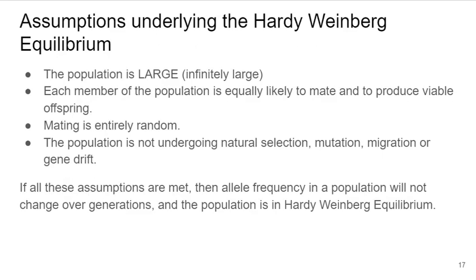There are some assumptions underlying the Hardy-Weinberg equilibrium: that the population is infinitely large; that each member is equally likely to mate and produce viable offspring; that mating is entirely random; and that there is no evolution happening — no natural selection, no mutation, no migration or genetic drift. Evolution is genetic change over time, so there is no genetic change due to any evolutionary force or mechanism. If all of these assumptions are met, then allele frequency in a population will not change over successive generations, and we can say the population is in Hardy-Weinberg equilibrium.